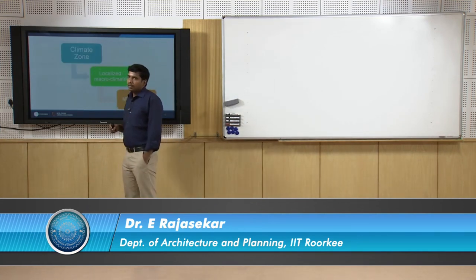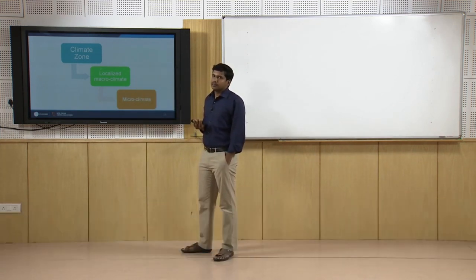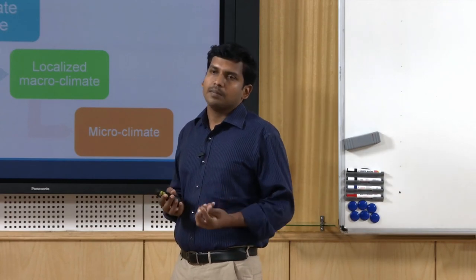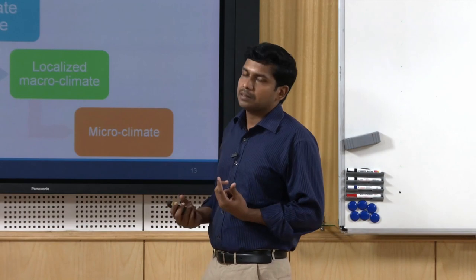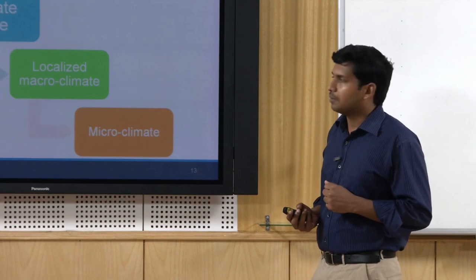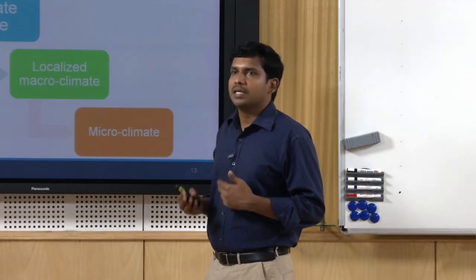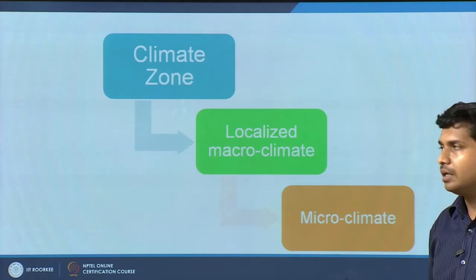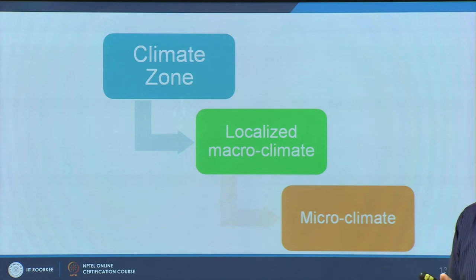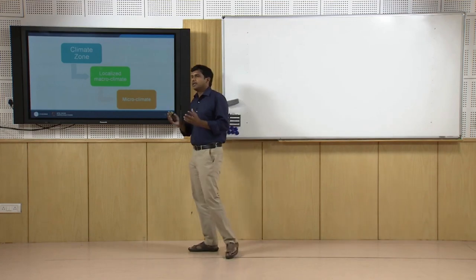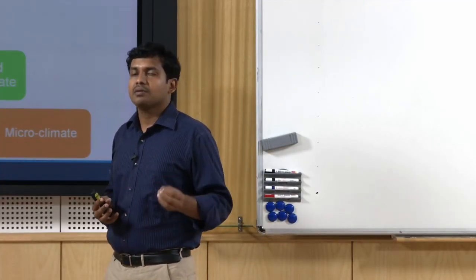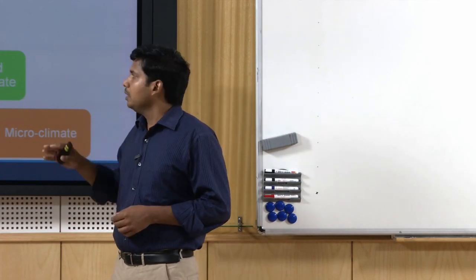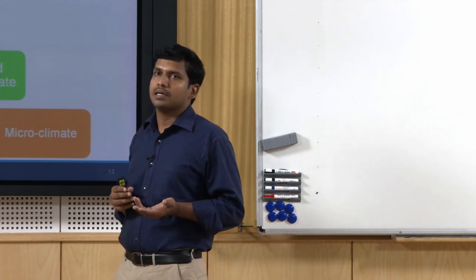Not all locations within, say, the warm humid or composite climate zone resemble the same. For example, cities like Delhi, Lucknow, Hyderabad, and Nagpur are all classified as composite climate, but they do not resemble each other in terms of their climatic pattern. We can narrow it down further to a localized macro climate — this is still not micro climate, it is a macro climate, but localized. This is a result of the geography around: if there are hilly areas, the long-wave radiation intensity may be more; if it is in a valley, it may be susceptible to more precipitation. Depending on altitude, latitude, and longitude, this will vary, and sunshine hours will vary from north to south of India.